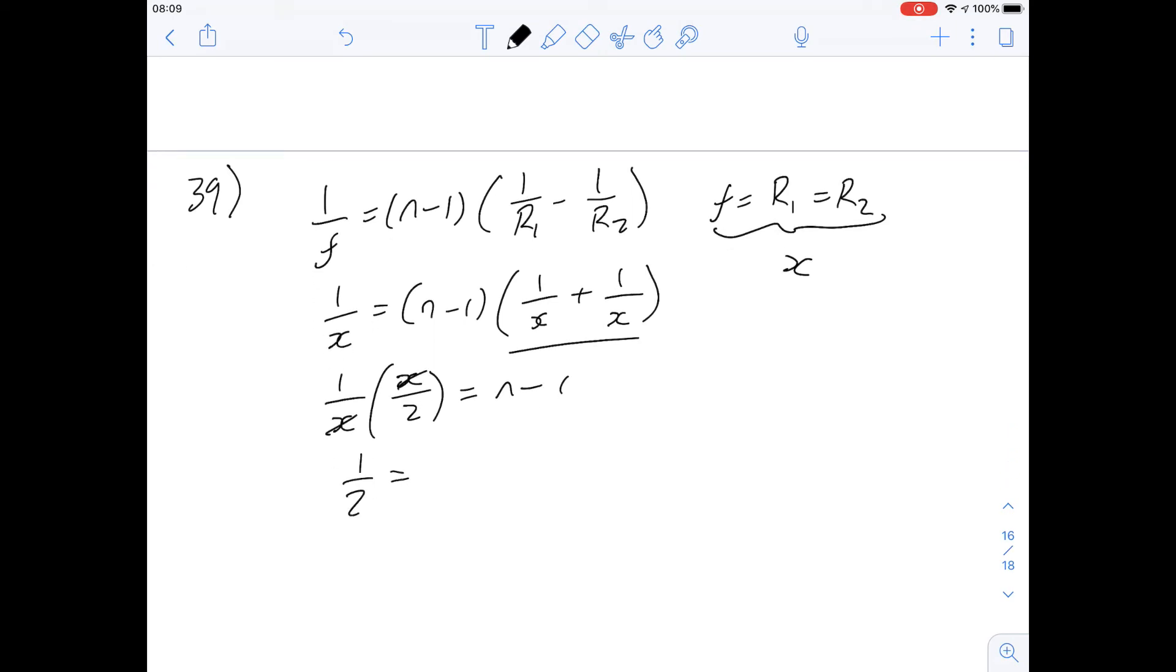But what that means then is we can cancel these x's. We've got a half equals n minus 1. So 1 plus a half is n. So n is going to be 1.5. The refractive index is going to be 1.5. And then that gives us an answer of B for question 39.